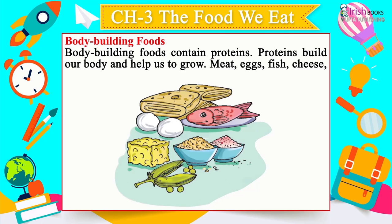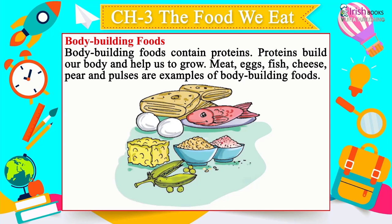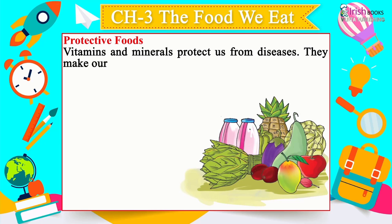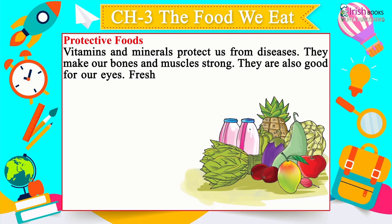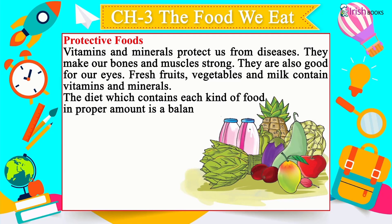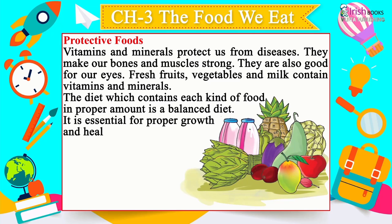Body-building foods contain proteins and help us grow — meat, eggs, fish, cheese, beer and pulses are examples. Protective foods: vitamins and minerals protect us from diseases, make bones and muscles strong, and are good for our eyes. Fresh fruits, vegetables and milk contain vitamins and minerals. A balanced diet contains each kind of food in the proper amount and is essential for proper growth and health.